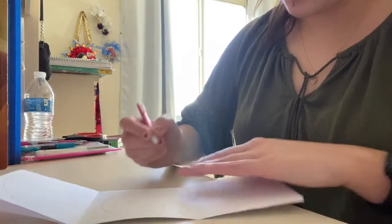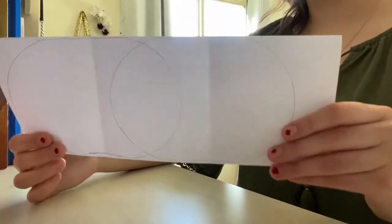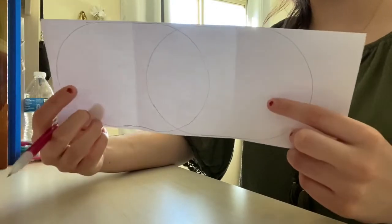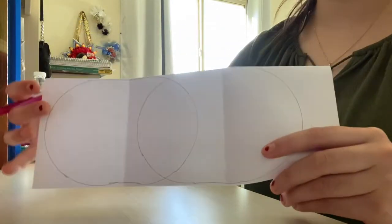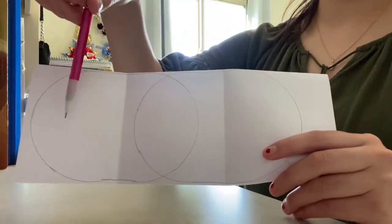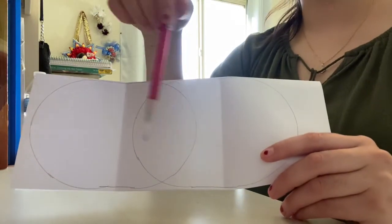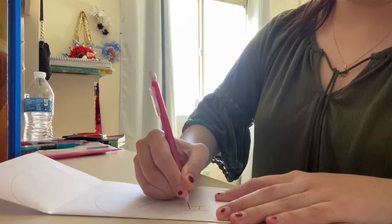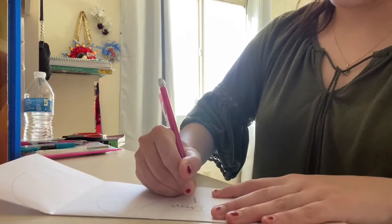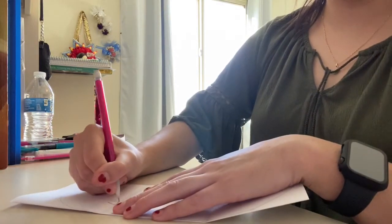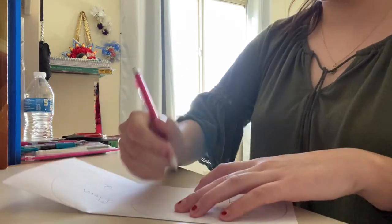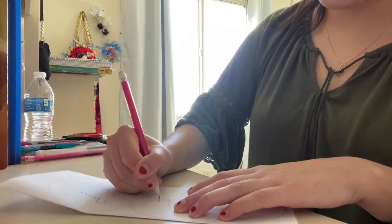So once you do that, you take whichever two items you are going to be comparing and you can label them on each side, and in the middle you can just call it both or similarities. Okay, so we'll do that real quick. Item one, item two, and in the middle we have both.